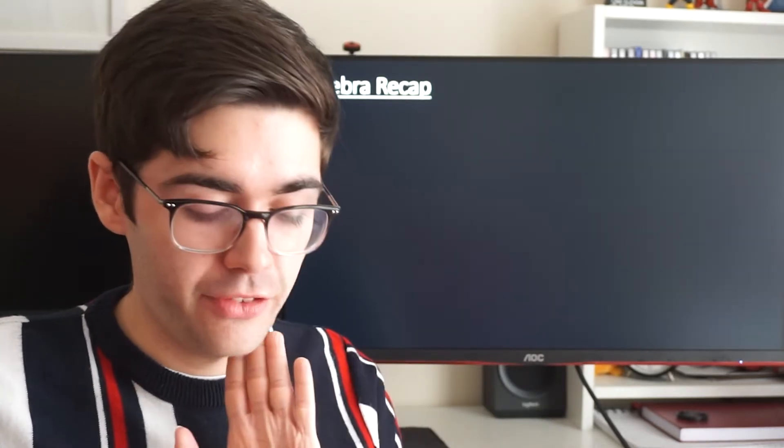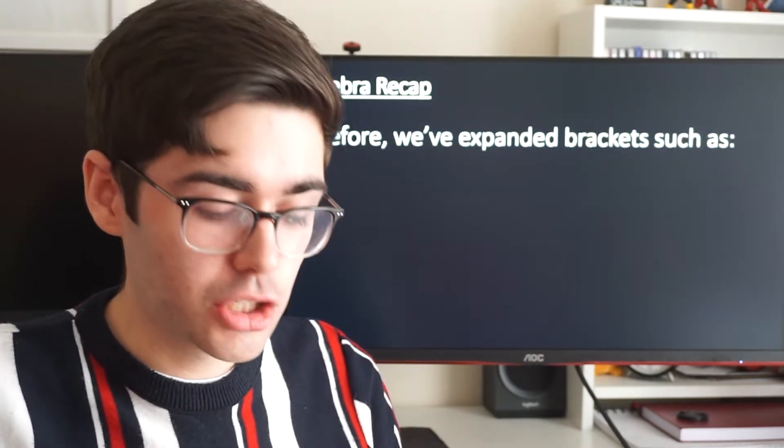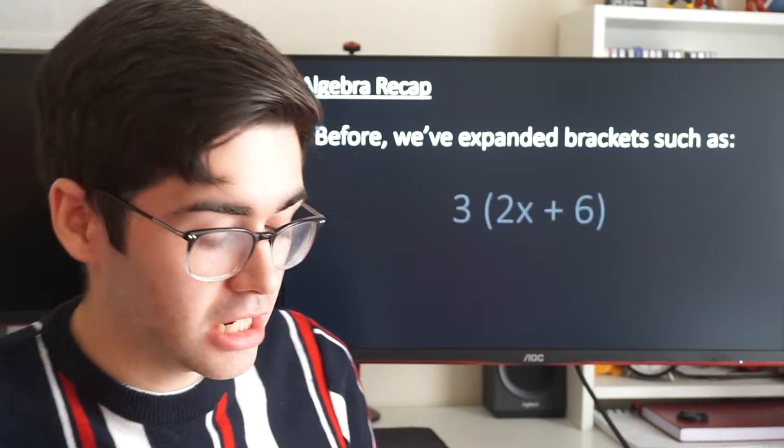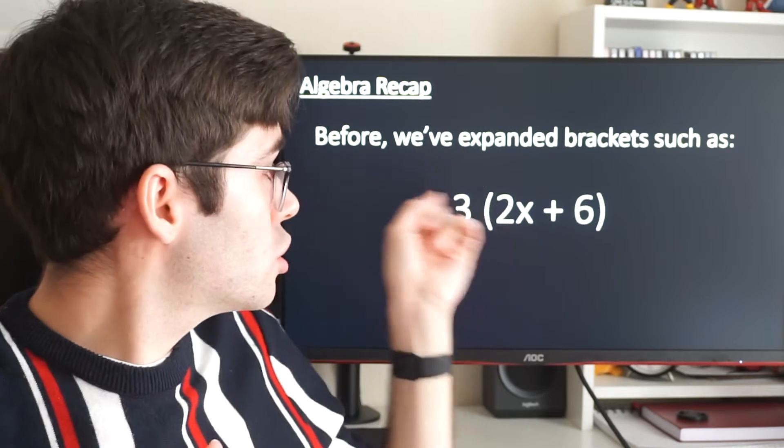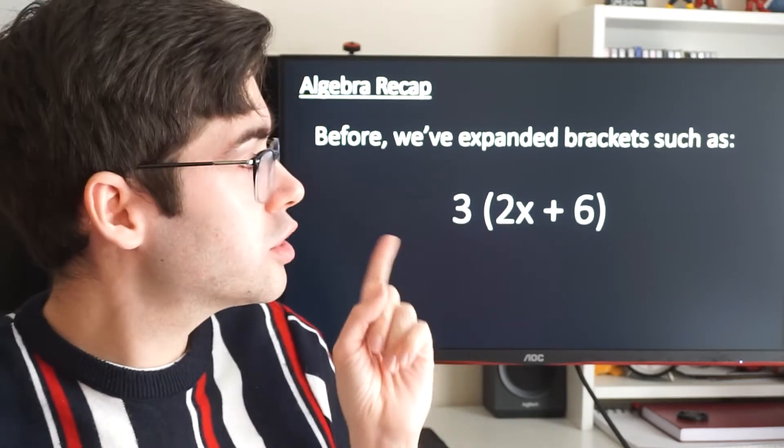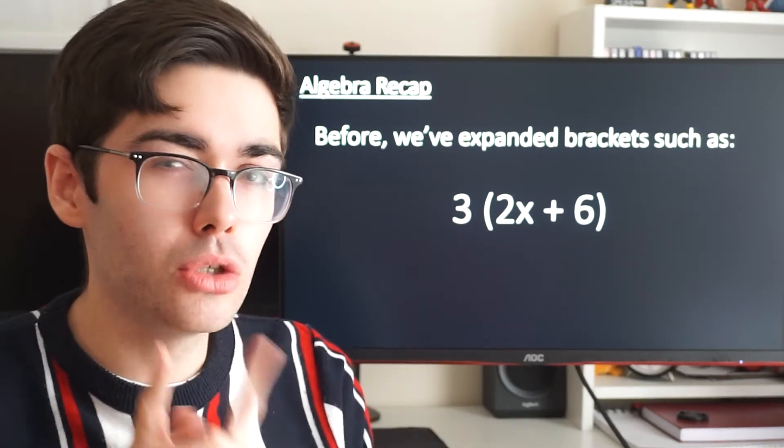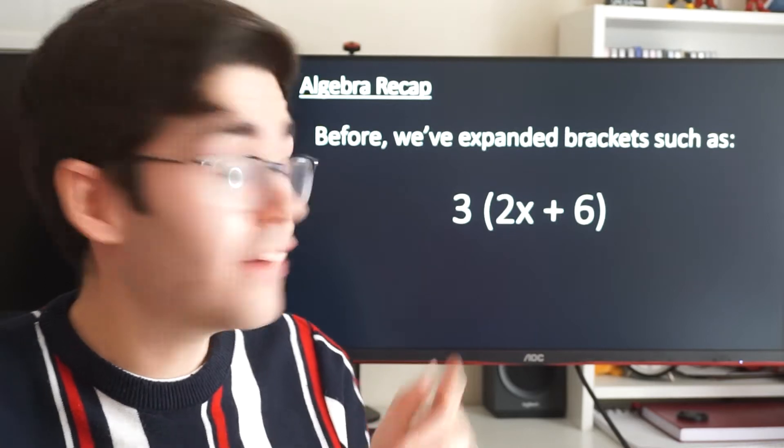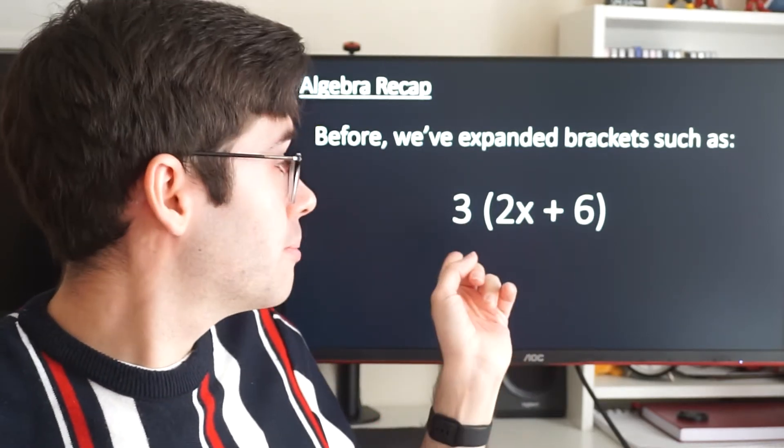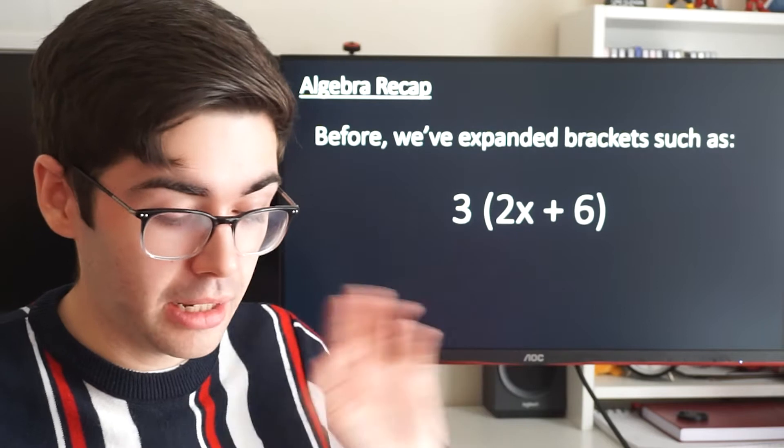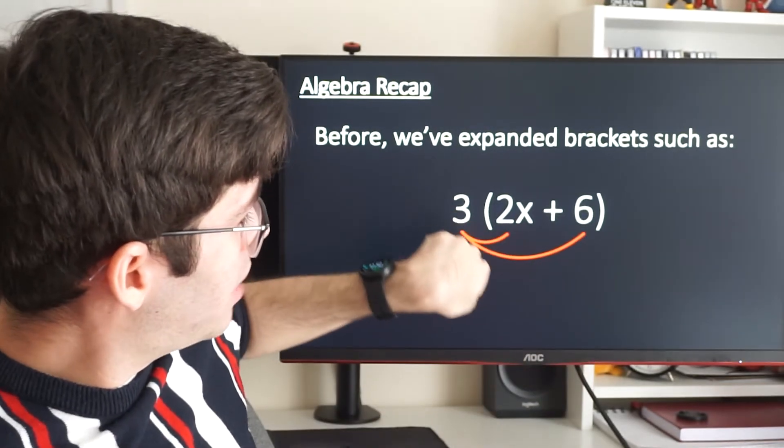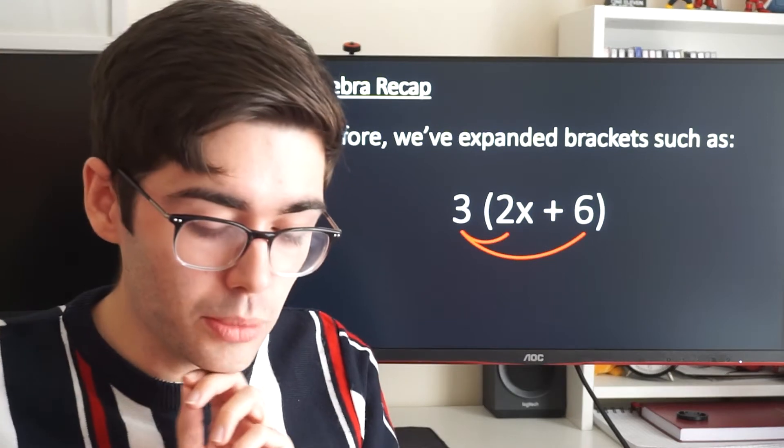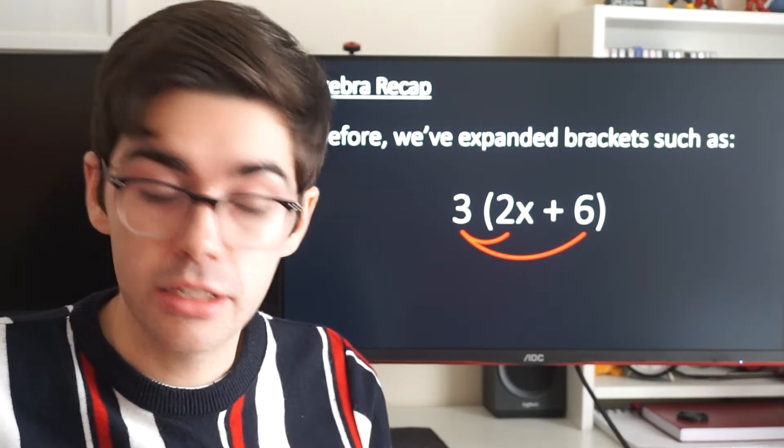So a little bit of a recap. Before in algebra we've looked at expanding brackets, things that look like this perhaps: 3 open brackets 2x plus 6. If I asked you to expand that bracket, what would you have to do? You'd have to multiply everything inside the bracket by 3, separately. So we could draw these two little lines here, and we do this multiplication, and we do this multiplication. So what would 3 times 2x be? That would be 6x.